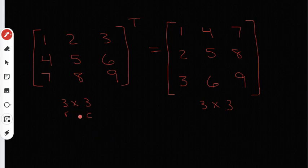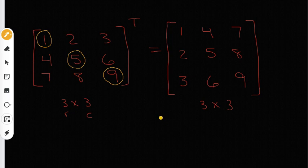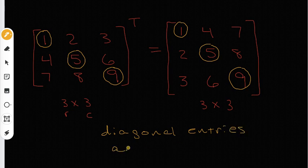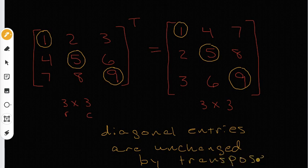Notice something special about the diagonal of this matrix. I'm going to circle all the diagonal elements starting from the top left and going down to the bottom right. These are called the diagonal elements: 1, 5, and 9, and they're always located on the main diagonal. Now circling the diagonal elements on the transpose matrix, you'll notice these diagonal elements are the exact same. The diagonal entries are unchanged by the transpose — whenever you have those diagonal entries, they remain the same.